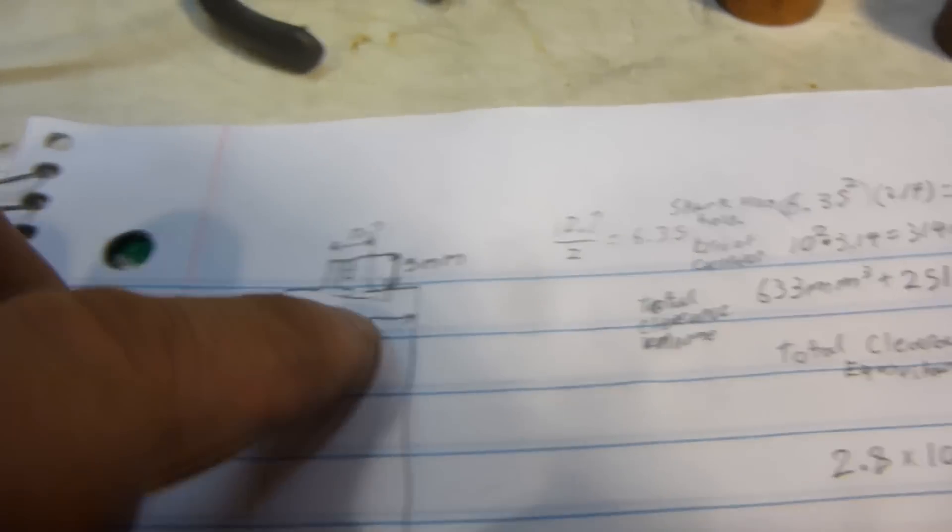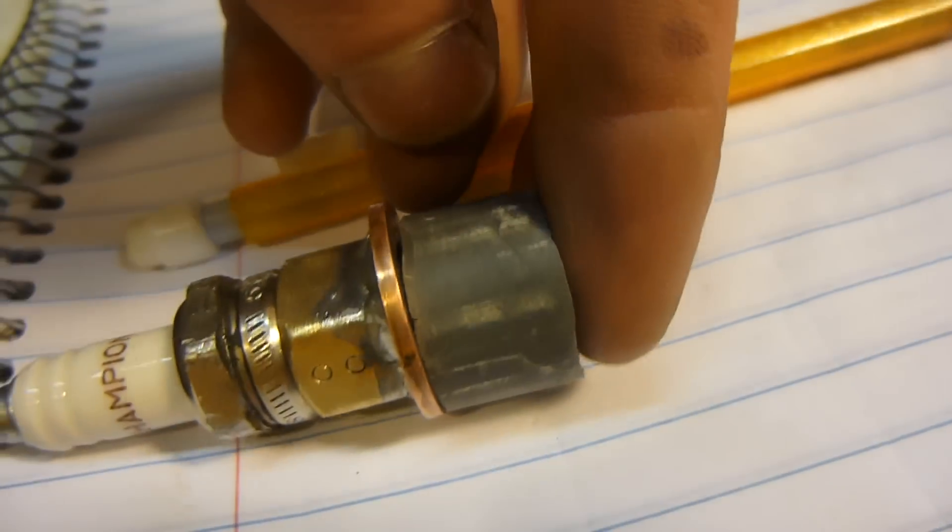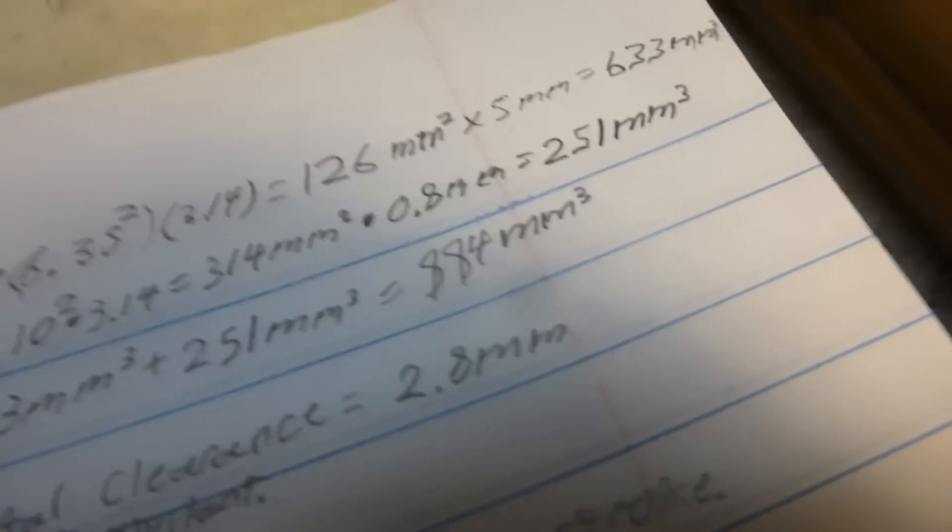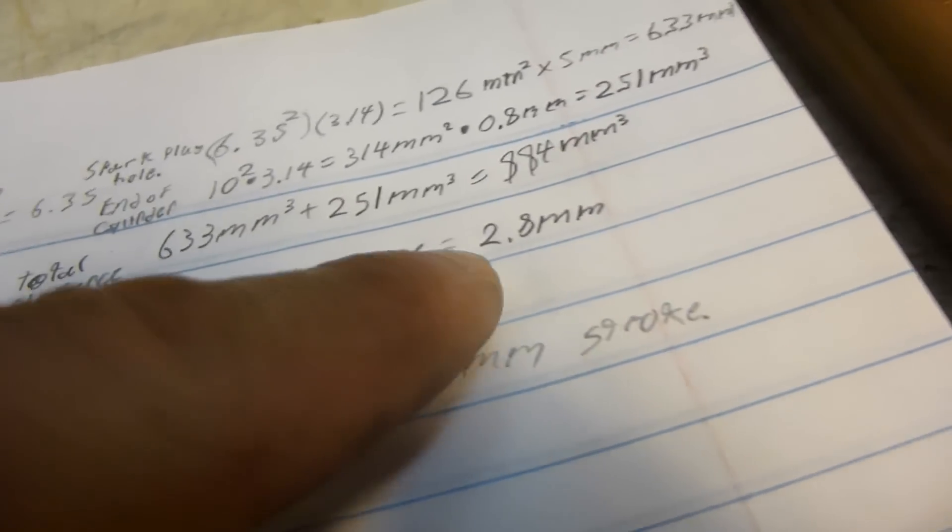The area of this hole - there's 0.8 millimeter clearance there. The top of the spark plug sticks out, so that's as close as the piston can actually get to the spark plug.